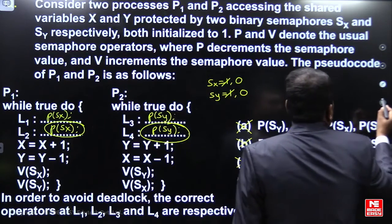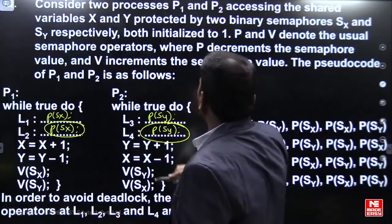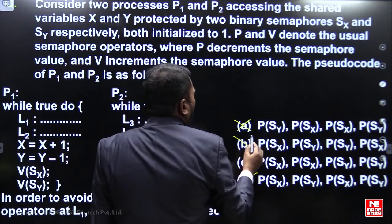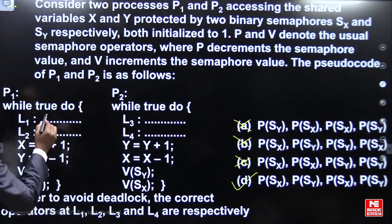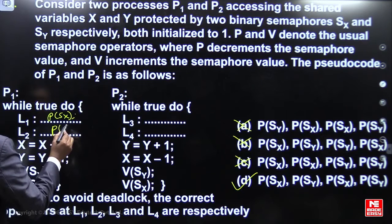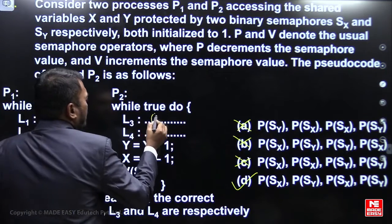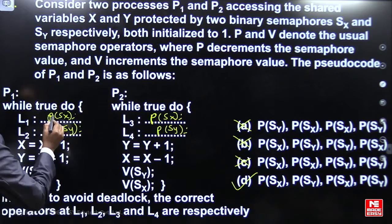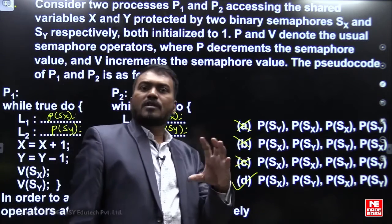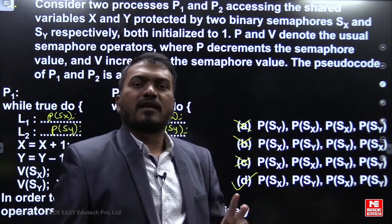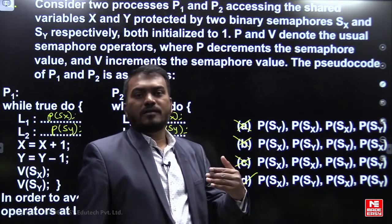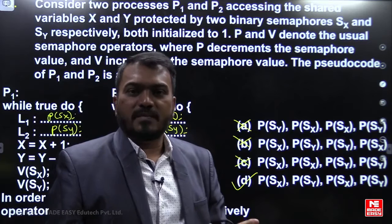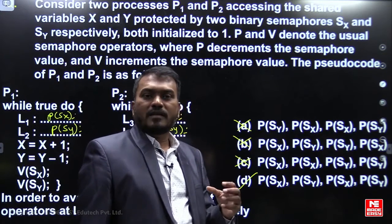The right answer is option D. In option D, both processes use down(SX) and down(SY) — the same order. Both processes will never suspend simultaneously; one process will definitely continue execution. Let's verify this by working through the execution trace.